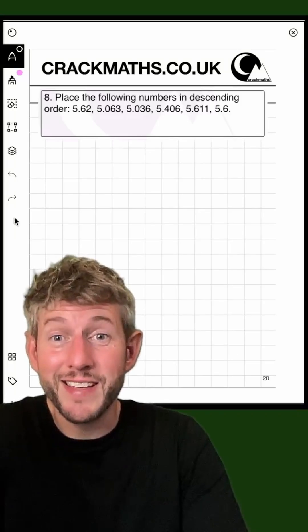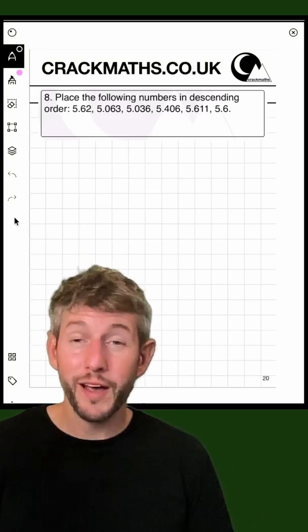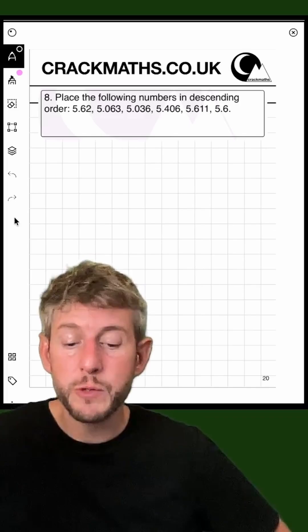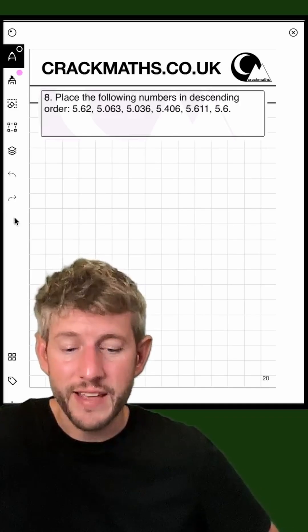Can you place these numbers in descending order? Well, descending order means largest to smallest, so we've got to find out which of these is the biggest number.